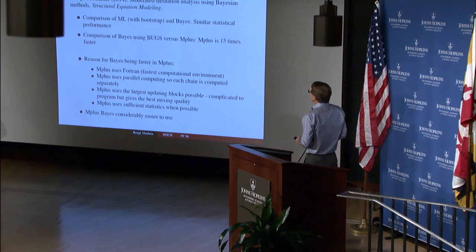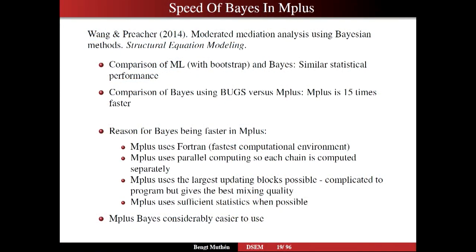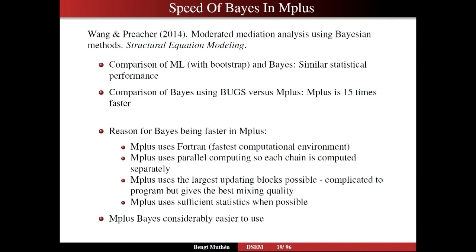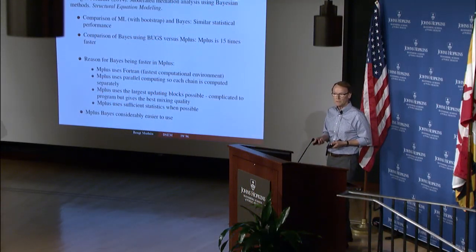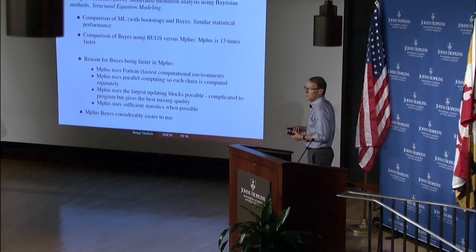That's the main guts of it. Speed of Bayes in M+: pretty good. Here's a paper that compared M+ and BUGS for moderated mediation — a topic relevant to yesterday. They used BUGS and M+ was 15 times faster. The reason is that M+ uses Fortran and parallel computing — each of the two chains computed separately — and Tiomar tailor-makes every application area's algorithm.